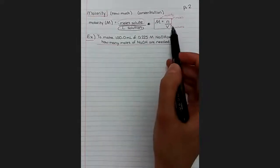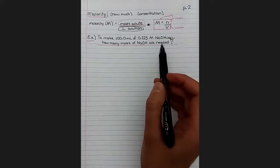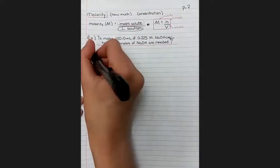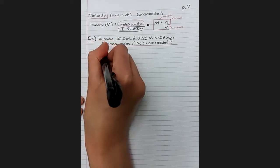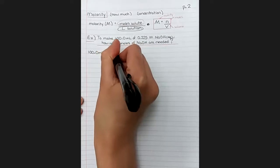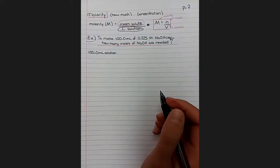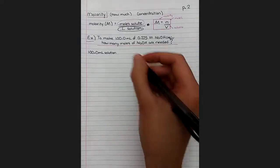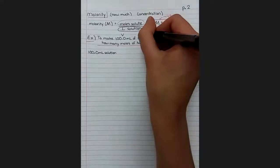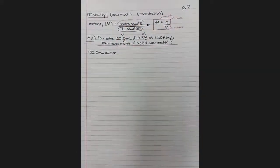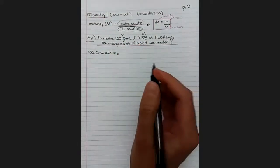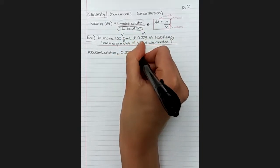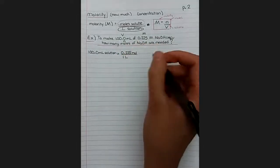So our formula says molarity equals moles over volume. And I see that I can just use dimensional analysis to solve this because all the units will cancel out as I need them to. So I'm going to start with the 100.0 milliliters and include words so that I can be sure that I'm measuring the volume of the correct thing. So we're going to take volume of solution and multiply it by the molarity, 0.225 mol per liter.